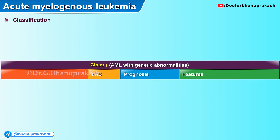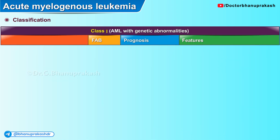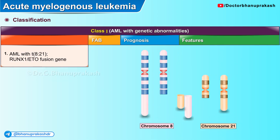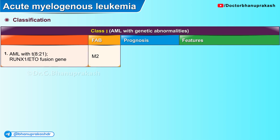Class 1 of the WHO includes acute myelogenous leukemia with genetic abnormalities. There are five different types, where type 1 is associated with translocation t(8;21), which results in the RUNX1-ETO fusion gene. It is the M2 variant of the FAB system with a favorable prognosis.